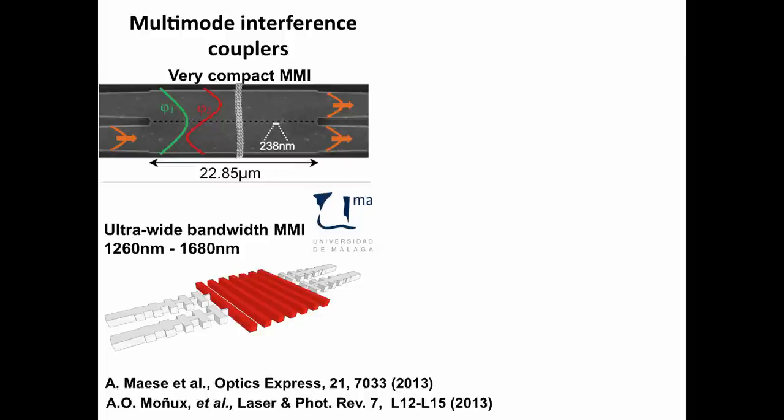Here you can see some multimode interference couplers developed at University of Malaga, where subwavelength structures were exploited to achieve a very compact design and an ultra-wide wavelength range from 1260 to 1680 nm, that is a bandwidth exceeding 400 nm.